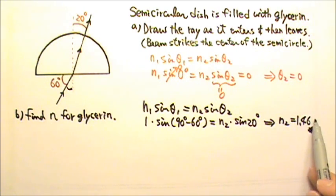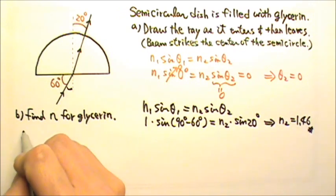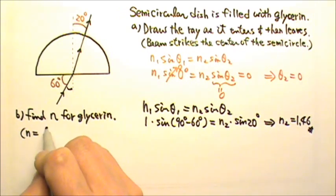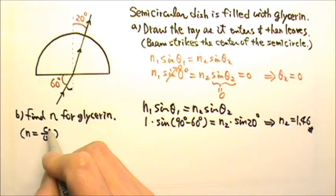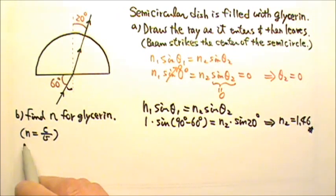The index of refraction does not have any unit. Because N is defined as C divided by V, it's speed divided by speed. So there's no unit for N.